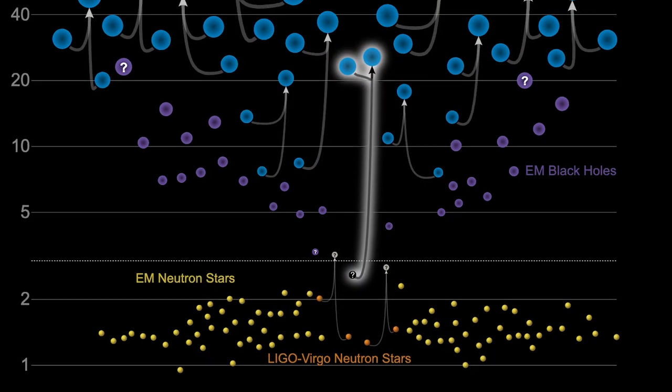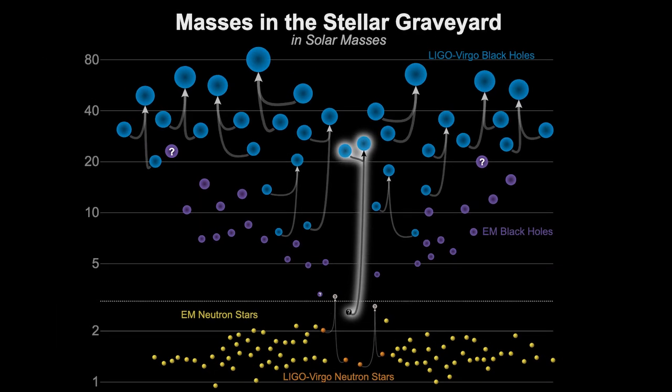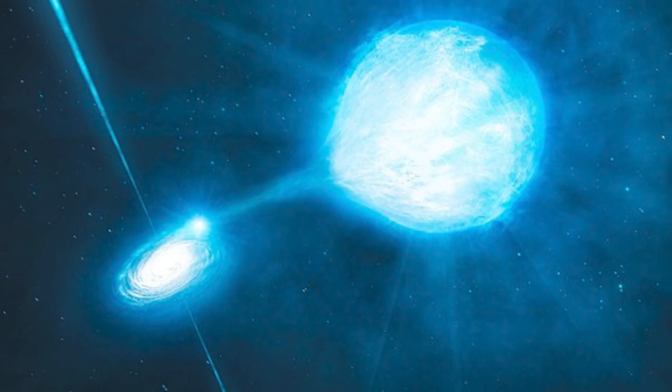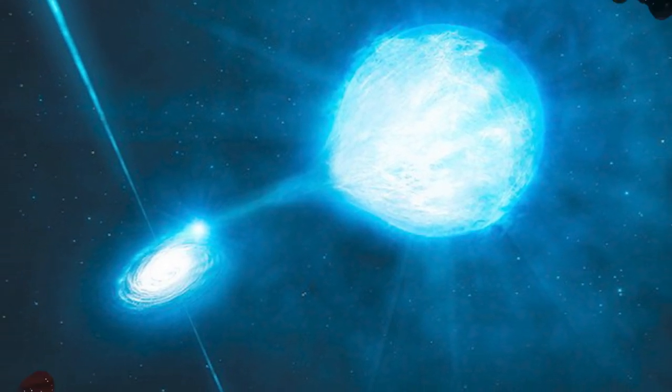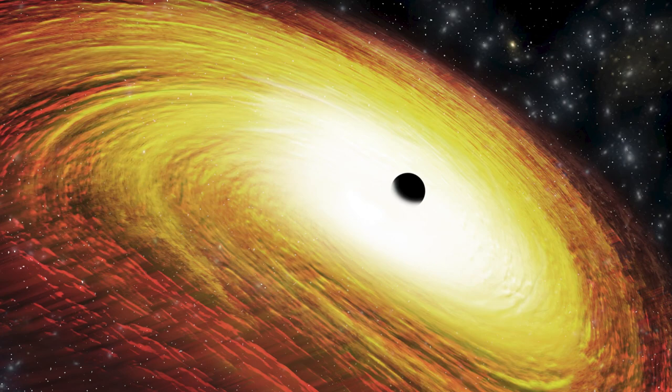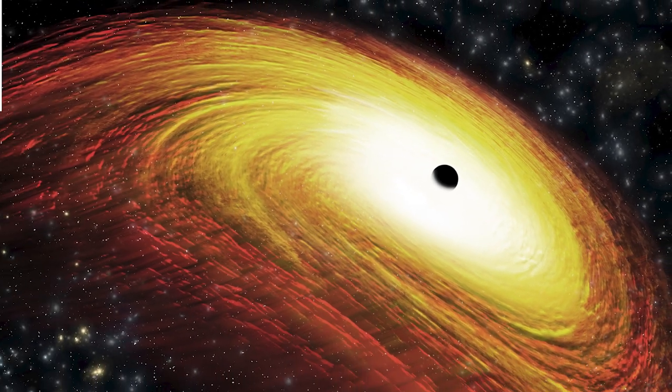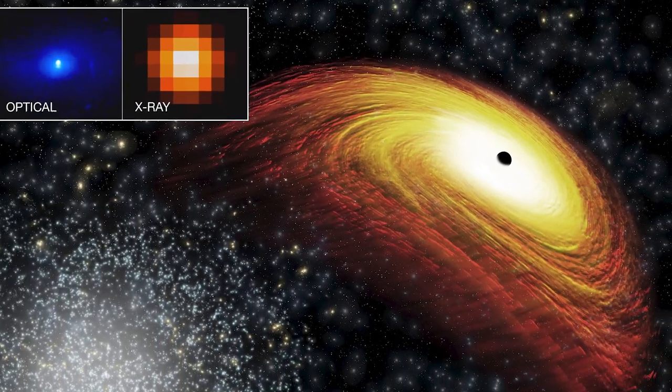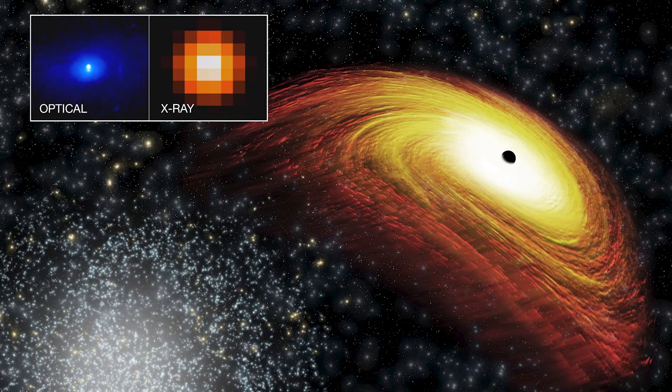For example, the kinds of black holes that LIGO can see merging are stellar mass black holes. These are a few times the mass of the Sun, up to a few dozen times the mass of the Sun. But there are much larger black holes out there, the supermassive black holes. These things are millions or billions of times more massive than the Sun.